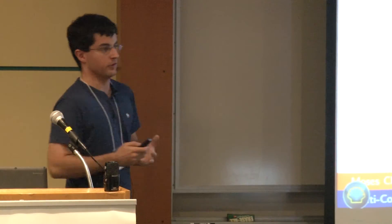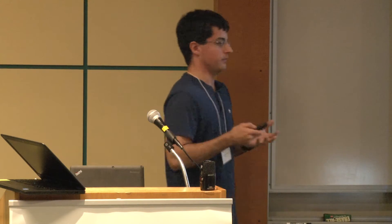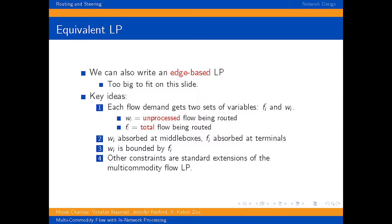So instead of actually going through the full linear program, I'm just going to give a brief overview of what that entails. Basically, instead of having one variable for each edge corresponding to how much flow is going through it, we now have two variables. We have one variable corresponding to the total amount of flow and one corresponding to the yet unprocessed flow. Processed flow can be deduced by subtracting one from the other.